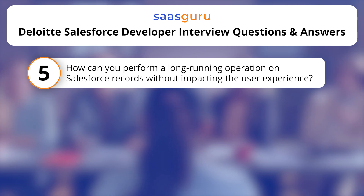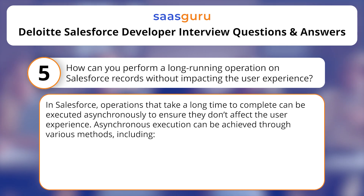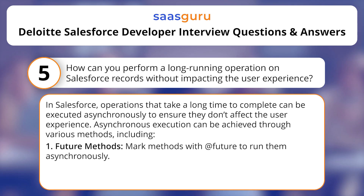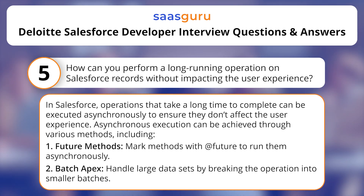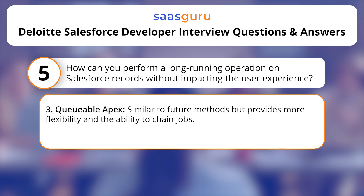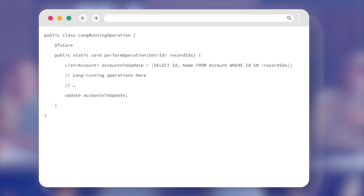How can you perform a long-running operation on Salesforce records without impacting the user experience? In Salesforce, operations that take a long time to complete can be executed asynchronously to ensure they don't affect the user experience. Asynchronous execution can be achieved through various methods, including: future methods — mark methods with @future to run them asynchronously; Batch APEX — handle large datasets by breaking the operation into smaller batches; Queueable APEX — similar to future methods but provides more flexibility and the ability to chain jobs; and Scheduled APEX — execute a class at specified times. Here's an example of a future method that performs an operation asynchronously.